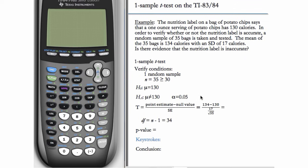Let's just let alpha be 0.05. Our t-statistic is the point estimate minus the null value over the SE. And our point estimate here is 134. That's what we got from our sample. Our null value is given by H sub 0.